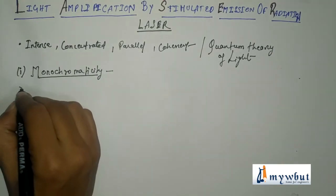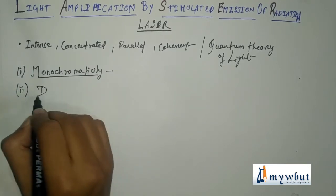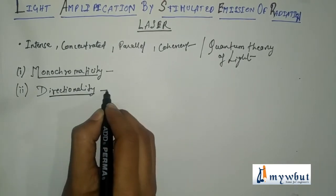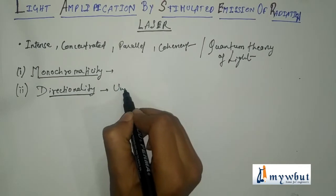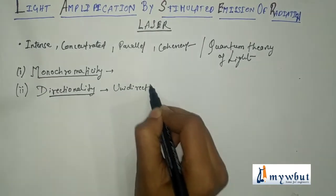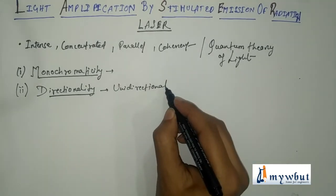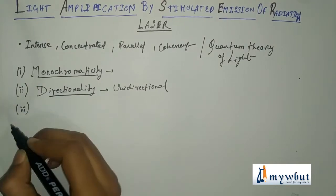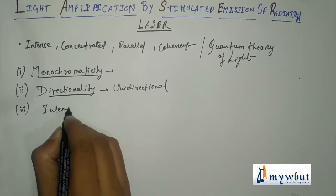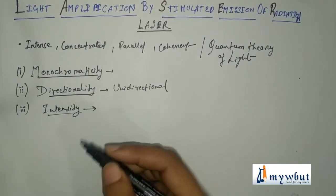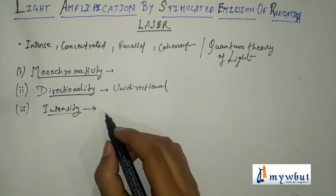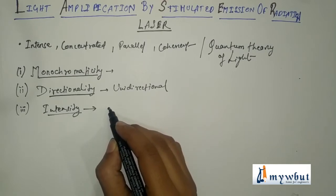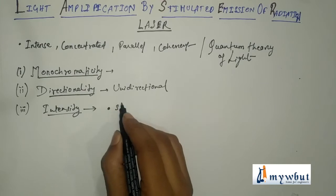Number two is directionality, which indicates that lasers are unidirectional. They are concentrators because of this property. Number three is intensity. Laser emits narrow beams of light, so the energy of the laser beam is concentrated in a very small region, hence laser beams are strongly intense.